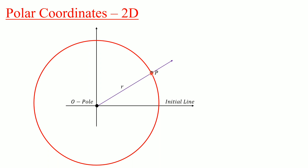There are infinitely many points on this circle — every point on the circle is at a distance R from the pole. So R alone will not give us the unique point P; R gives us all points at distance R from the pole.